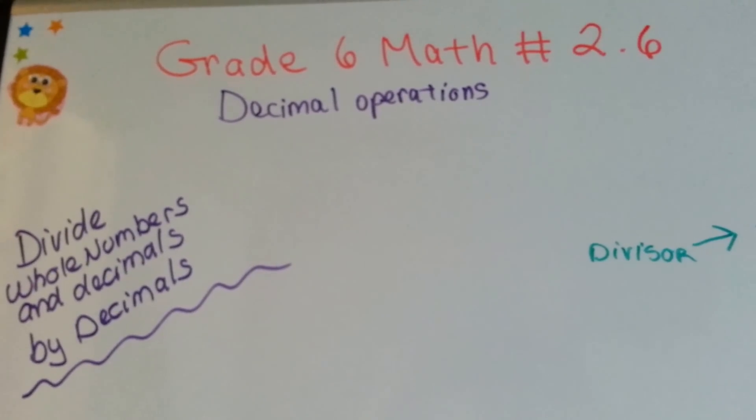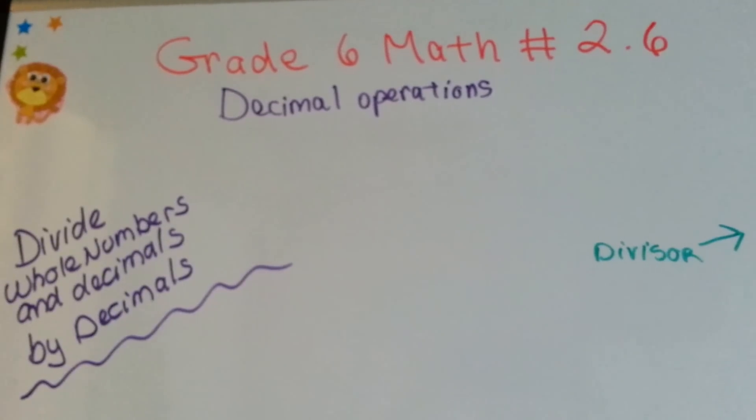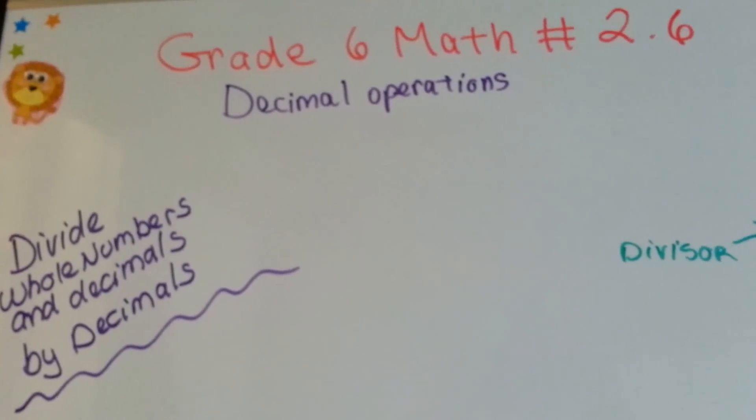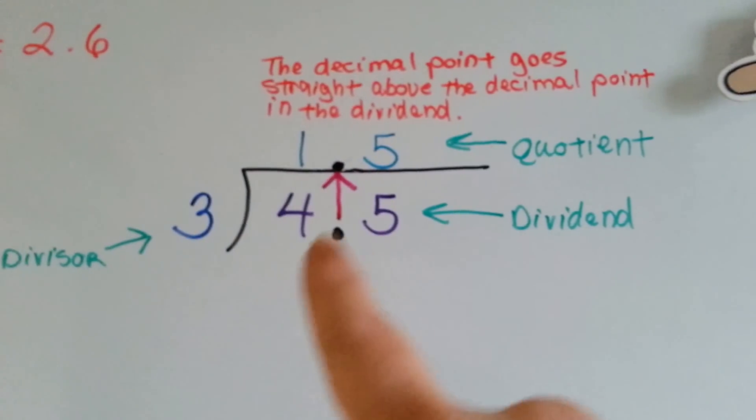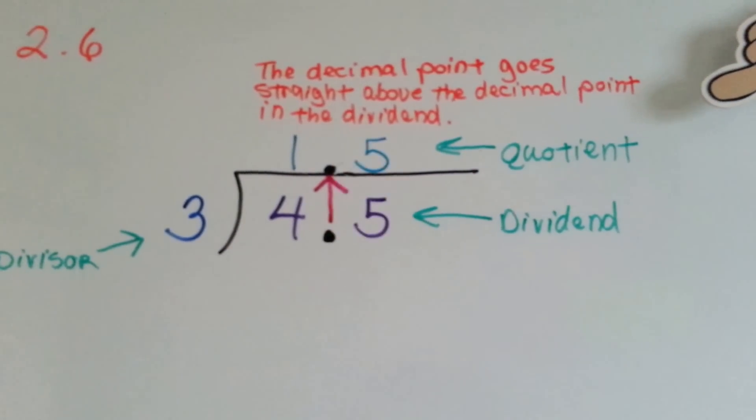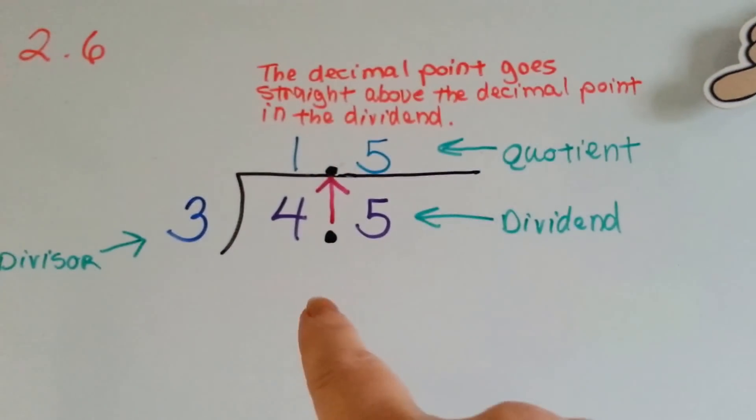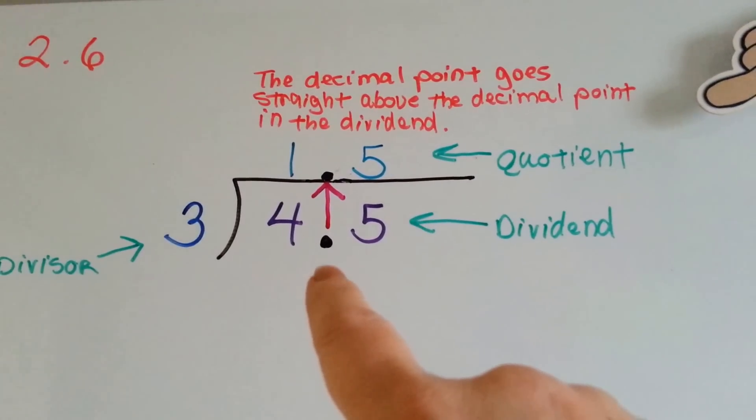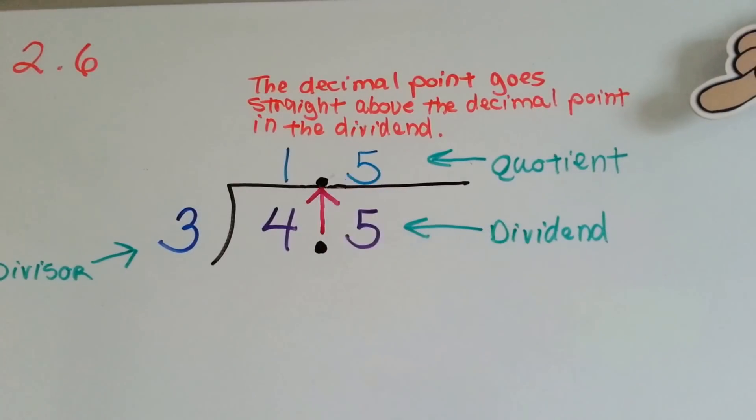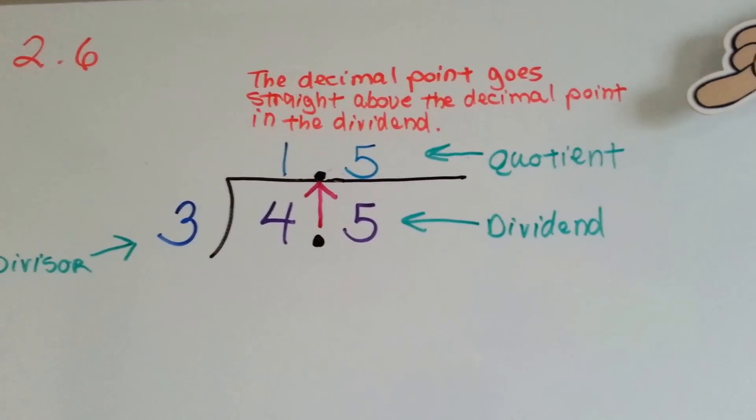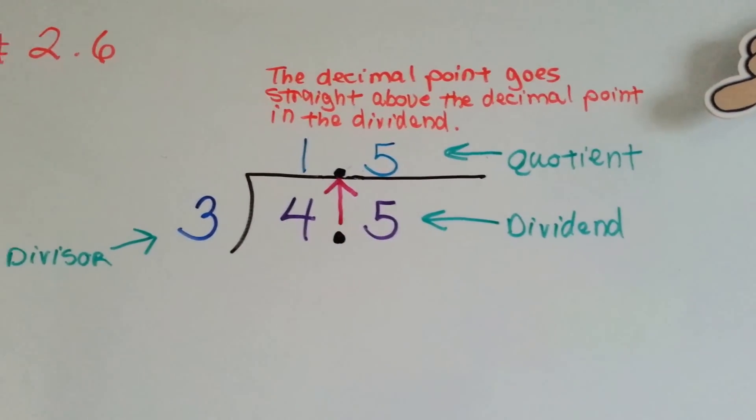Grade 6 math, number 2.6: Divide whole numbers and decimals by decimals. If you remember, the divisor is out here on the outside. That's the dividend and that's the quotient up on top, the answer. And our decimal point is going to go directly above the dividend decimal point to the quotient. And that's where you know to put the decimal point in the answer, in the quotient.